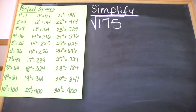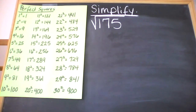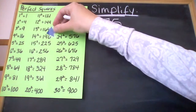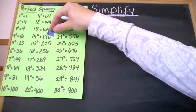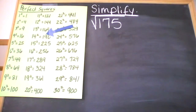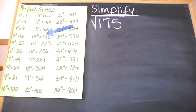Here's another example. We're simplifying the square root of 175. Again, we're first going to make a list of our perfect squares — I have it over here on the green sheet of paper. I'm going to find where 175 falls. 175 falls between 169 and 196. So I have to do some division and see which of those perfect squares is the biggest that can divide evenly into 175.